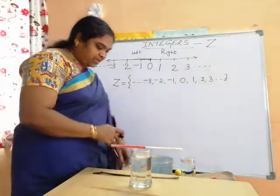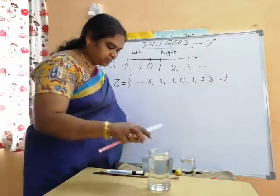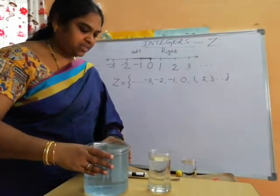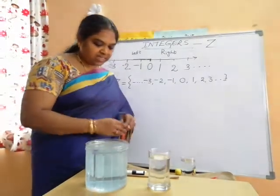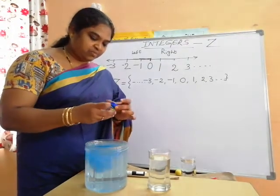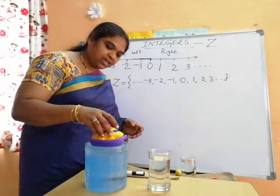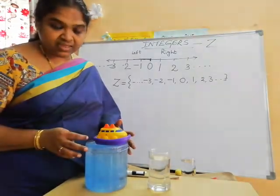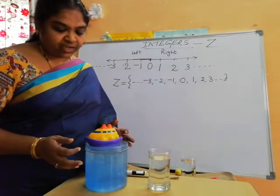I will give some more examples. Imagine this is the sea — blue color. You see a boat floating nicely on the sea. It is floating on the water and it is above the sea level. And if you take a glass of water, observe — I am dropping this toy fish in the water. The fish is staying at the level of the water.